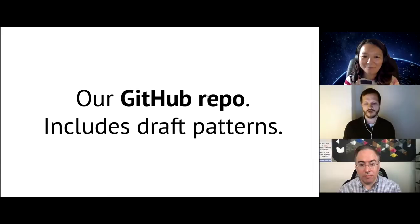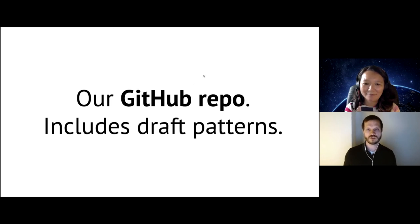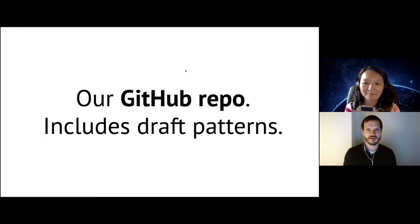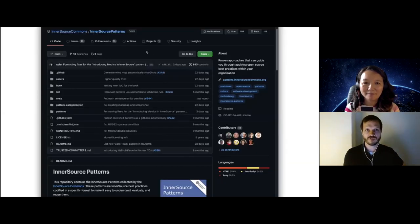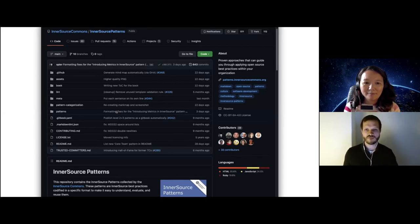But there are even more patterns that are not that mature yet. You can also take a look at our GitHub repository that contains a lot of drafts that people are developing right now — ideas for patterns that companies have. Later in the session today, we'll talk about one such draft. The repository is called 'innersource-patterns' under the InnerSource Commons organization. If you scroll down in there, you'll find a whole list of initial draft patterns that you can already use, ask questions about, and contribute to.